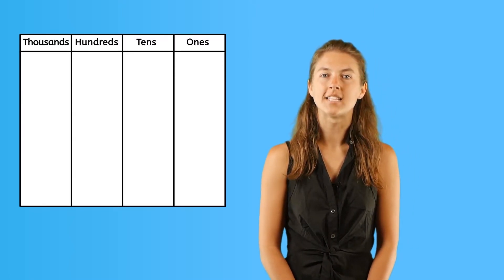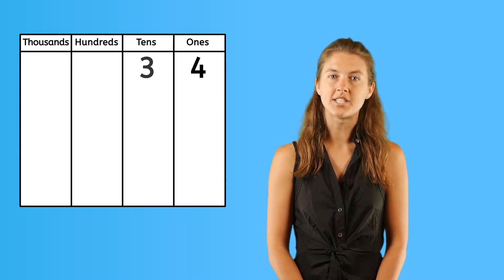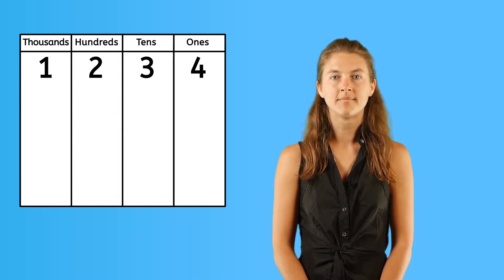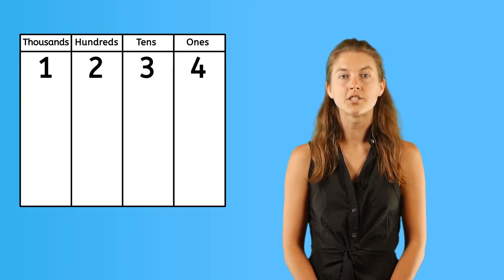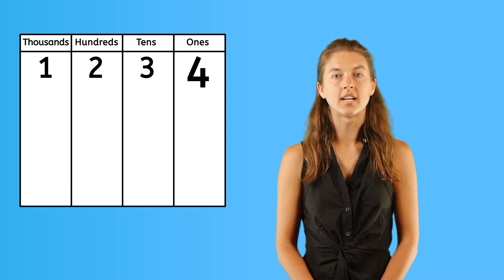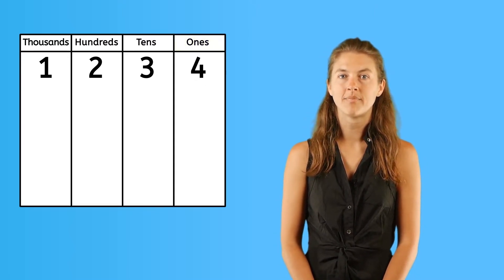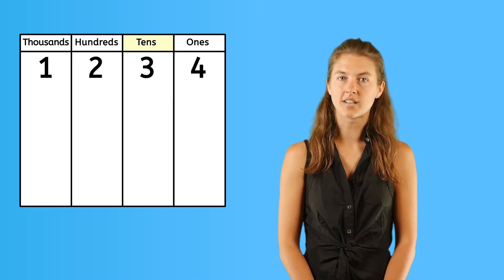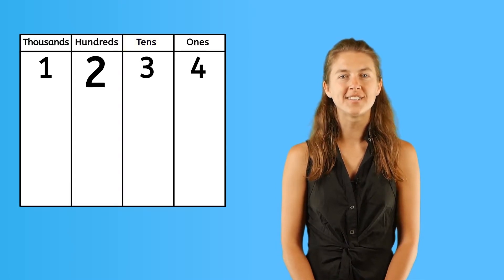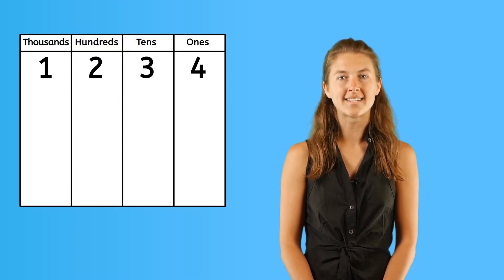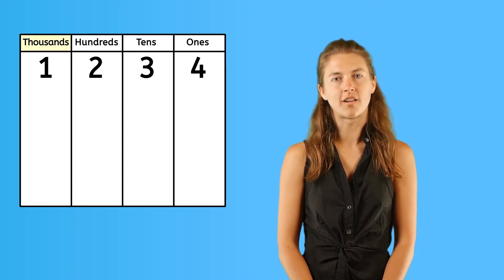If we place this number on a place value chart, we place the digits from right to left. Now, when we look at the chart, we can see that the 4 is in the ones column, the 3 is in the tens column, the 2 is in the hundreds column, and the 1 is in the thousands column.